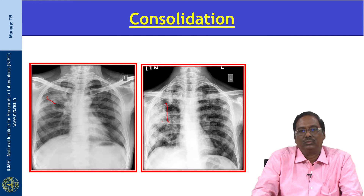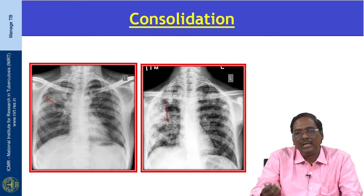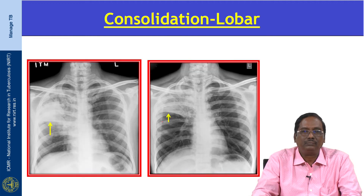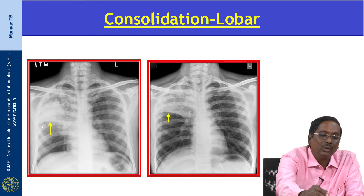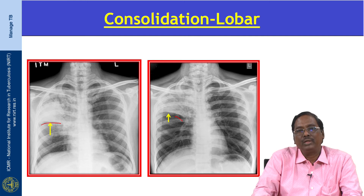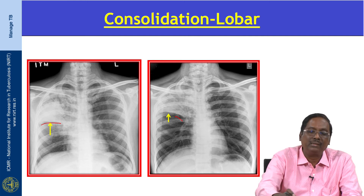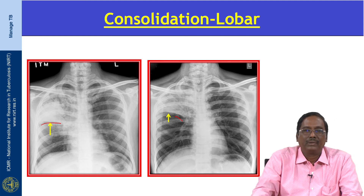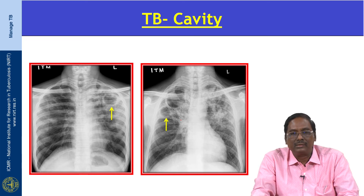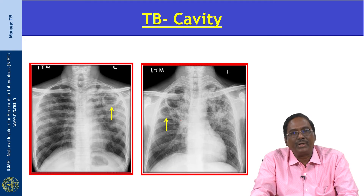In post-primary TB, the lesions are initially fluffy opacities that coalesce to form nodular opacities, which may be non-segmental. The consolidation involves the upper lobe and is usually an ill-defined airspace opacity that becomes sharper when it touches the fissure. Cavity is the sine qua non of post-primary TB and is evident in 40 percent of cases. It usually occurs in an area of consolidation, and the walls may be thin, smooth, thick, or nodular.